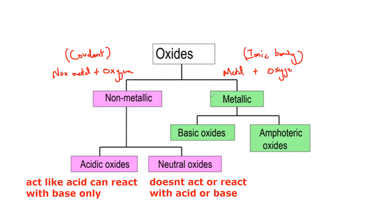Oxide can be divided into metal oxide or non-metal oxide, and non-metal oxides are further divided into acidic and neutral. An acidic oxide acts like an acid, so it can react with base only — it does not react with acid. A neutral oxide does not react with acid or base. Metal oxides are divided into two categories: basic oxide and amphoteric oxide.